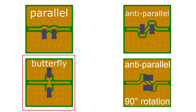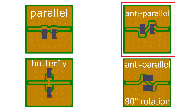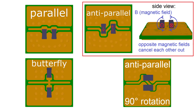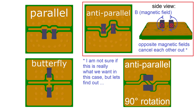Another potential solution is the anti-parallel configuration. By placing the capacitors this way, this capacitor will deliver current in one direction and this one in the other direction. As the currents are in opposite directions, the magnetic fields will cancel each other out to some extent, which avoids common mode currents and emissions.